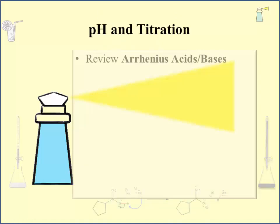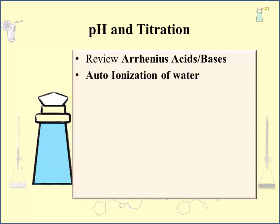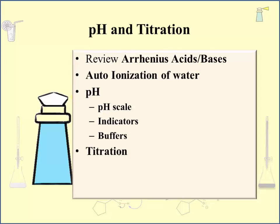The lecture begins with a review of Arrhenius acids and bases, since their reactions take place in water. The auto-ionization of water follows right behind. That leads to the definition of pH, with a description of the pH scale, an introduction into indicators, and a discussion of buffers. The other major topic is titration — after an introduction, an important equation relating amounts of acids and bases is examined, and finally a review of titration curves is presented.